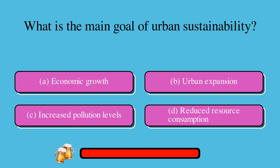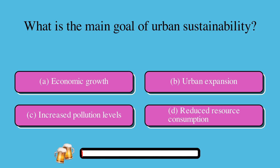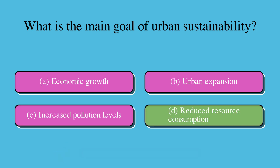What is the main goal of urban sustainability? A. Economic growth, B. Urban expansion, C. Increased pollution levels, or D. Reduced resource consumption? The correct answer is D. Reduced resource consumption.